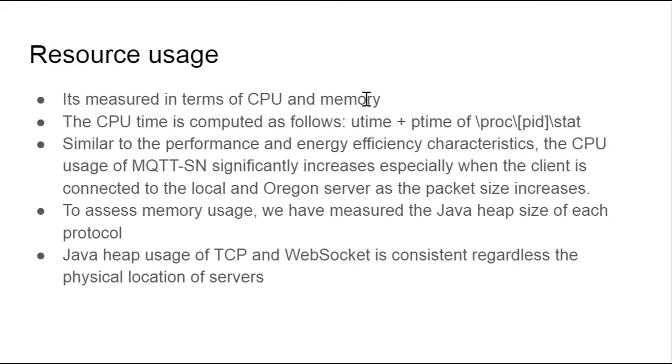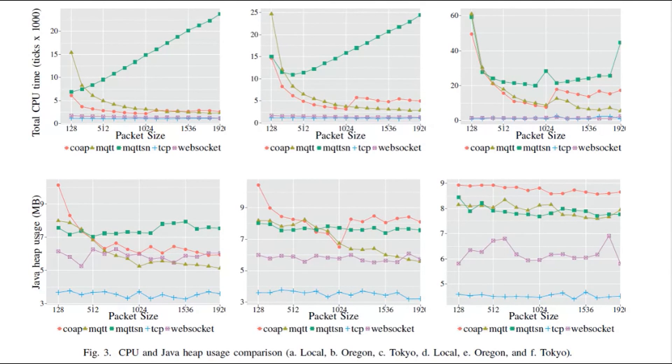Resource usage is measured in terms of CPU and memory. Similar to performance and energy characteristics, CPU usage of MQTT-SN increases when the client is connected to the local and Oregon server as the package size increases. Java heap usage, which measures memory, is consistent regardless of physical location of servers for TCP and WebSocket. CoAP requires more memory than other protocols when the client is connected to Oregon and Tokyo cases. Such patterns were not observed in performance, energy efficiency, and CPU time experiments due to fragmentation. The results show that CoAP's retransmission mechanism is mainly affected by memory usage rather than CPU usage.